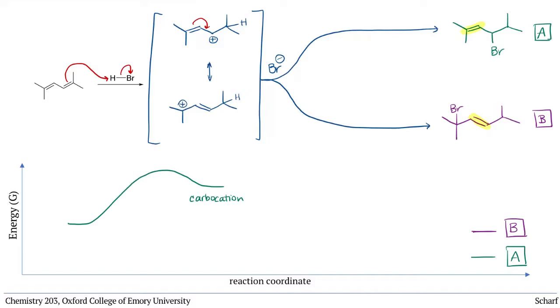So it might seem that this product must be the major one, and it is, at relatively high temperatures. But if we cool this reaction down, we actually see the selectivity switch. The other product becomes major.